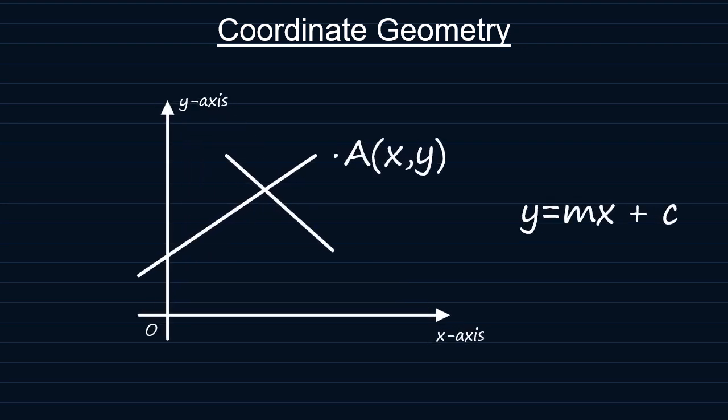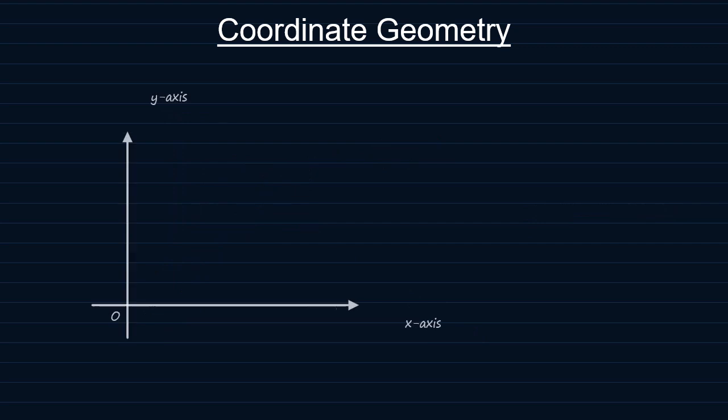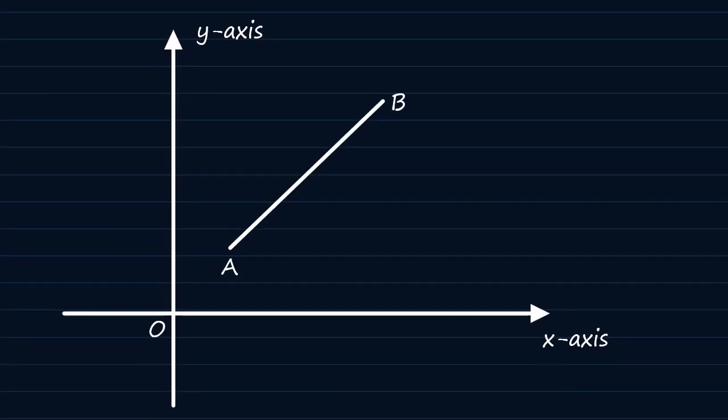From a previous video, we learned that if we have a line AB passing through the points A of coordinates x1, y1 and B of coordinates x2, y2, the horizontal displacement can be given as x2 minus x1 and the vertical displacement as y2 minus y1.